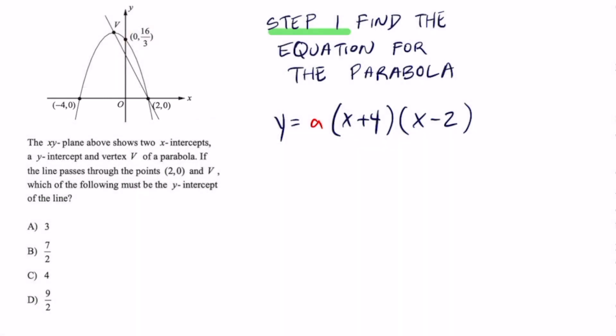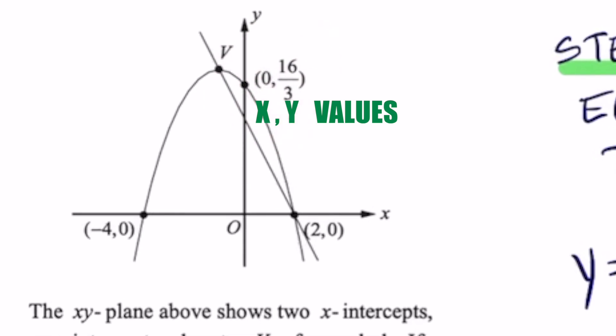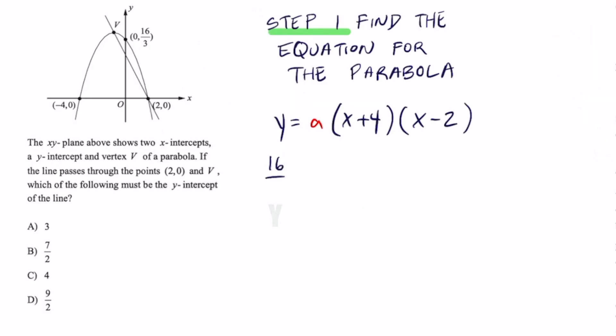To get your 'a' value, that's probably why they gave that information right here. Your 0 represents your x and 16 over 3 represents your y. So let's substitute that in. It's going to be 16 over 3 equals a. Don't forget that your x value is 0, so you're going to plug in 0 in there. This makes it easy because 0 plus 4 is just 4 and 0 minus 2 equals negative 2.